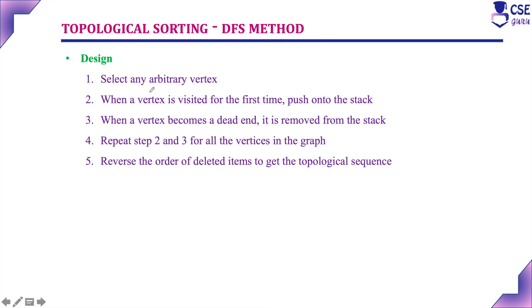In the given graph, select one vertex as the arbitrary vertex. When a vertex is visited for the first time, push it onto the stack. When a vertex becomes a dead end, remove it from the stack. Repeat these steps for all vertices in the given graph. Then reverse the order of deleted items from the stack to get the topological sequence.